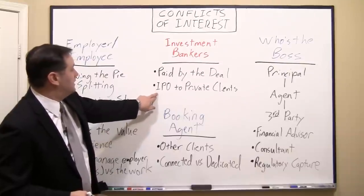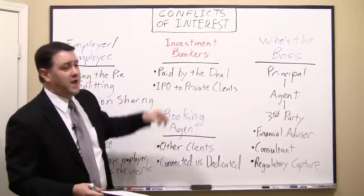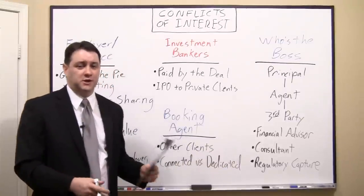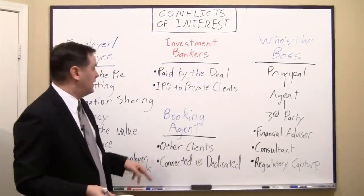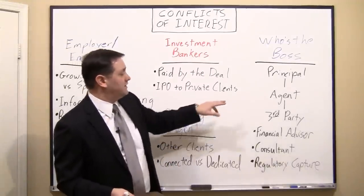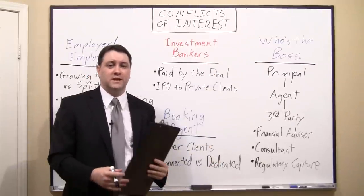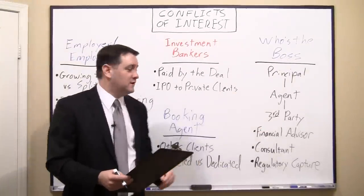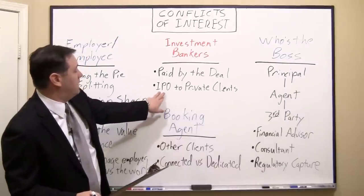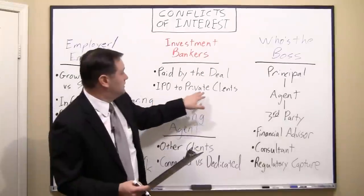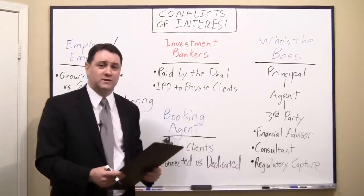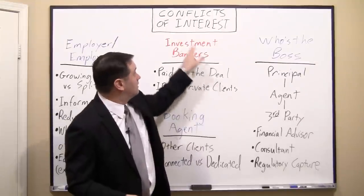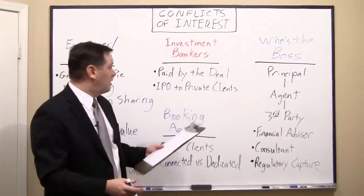Another example is when companies go public with an initial public offering. Typically the bank says, 'Great news — I'm going to underwrite that, meaning I'll find enough people to buy the initial shares at our set price.' But what they oftentimes do is sandbag the price so that when private clients buy in, those private clients get a big boost in their portfolio. This increases the private clients' loyalty to that bank. So essentially they're sandbagging the value of the money you're going to raise through your IPO to bribe other clients into loyalty to their firm.